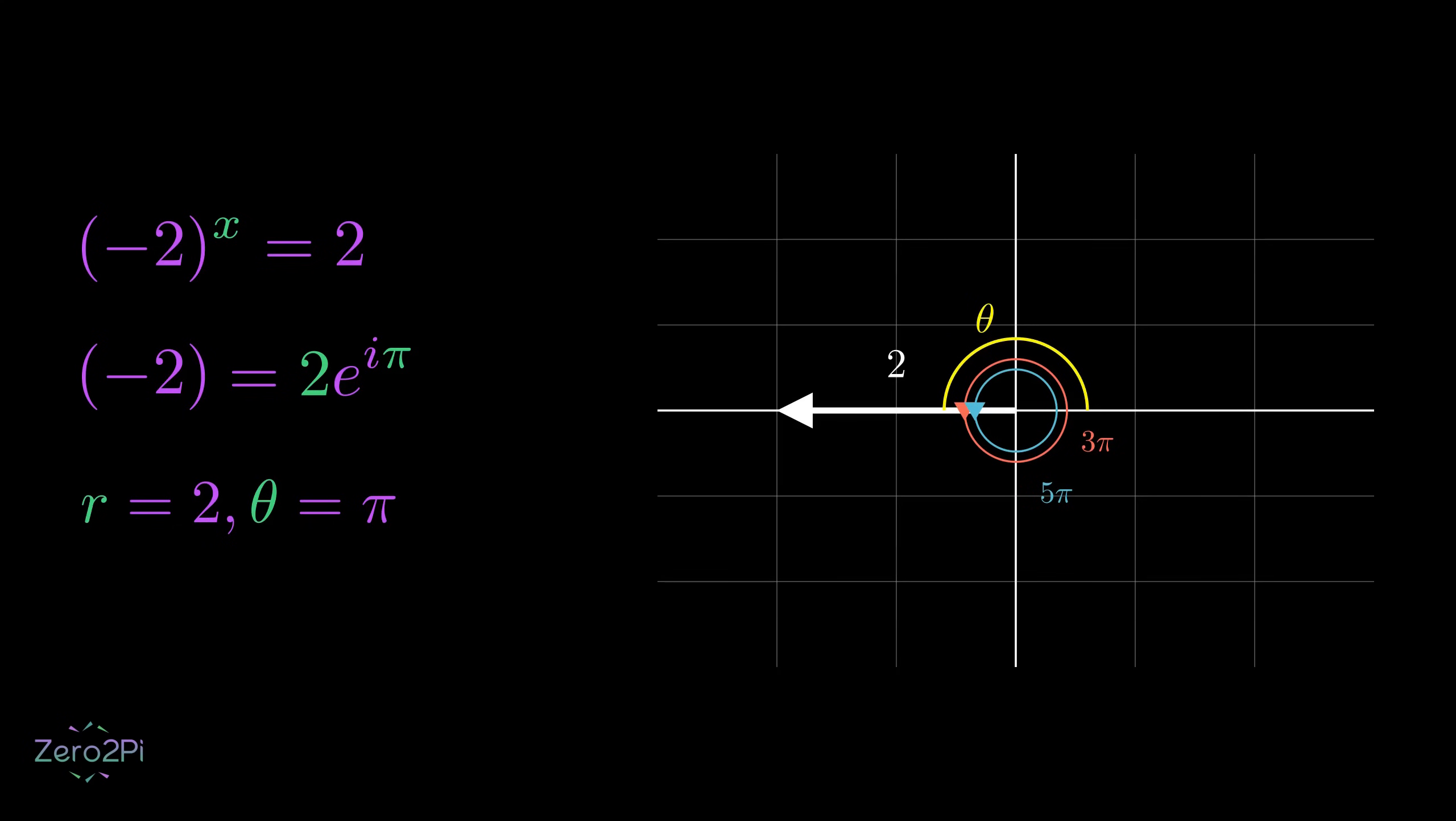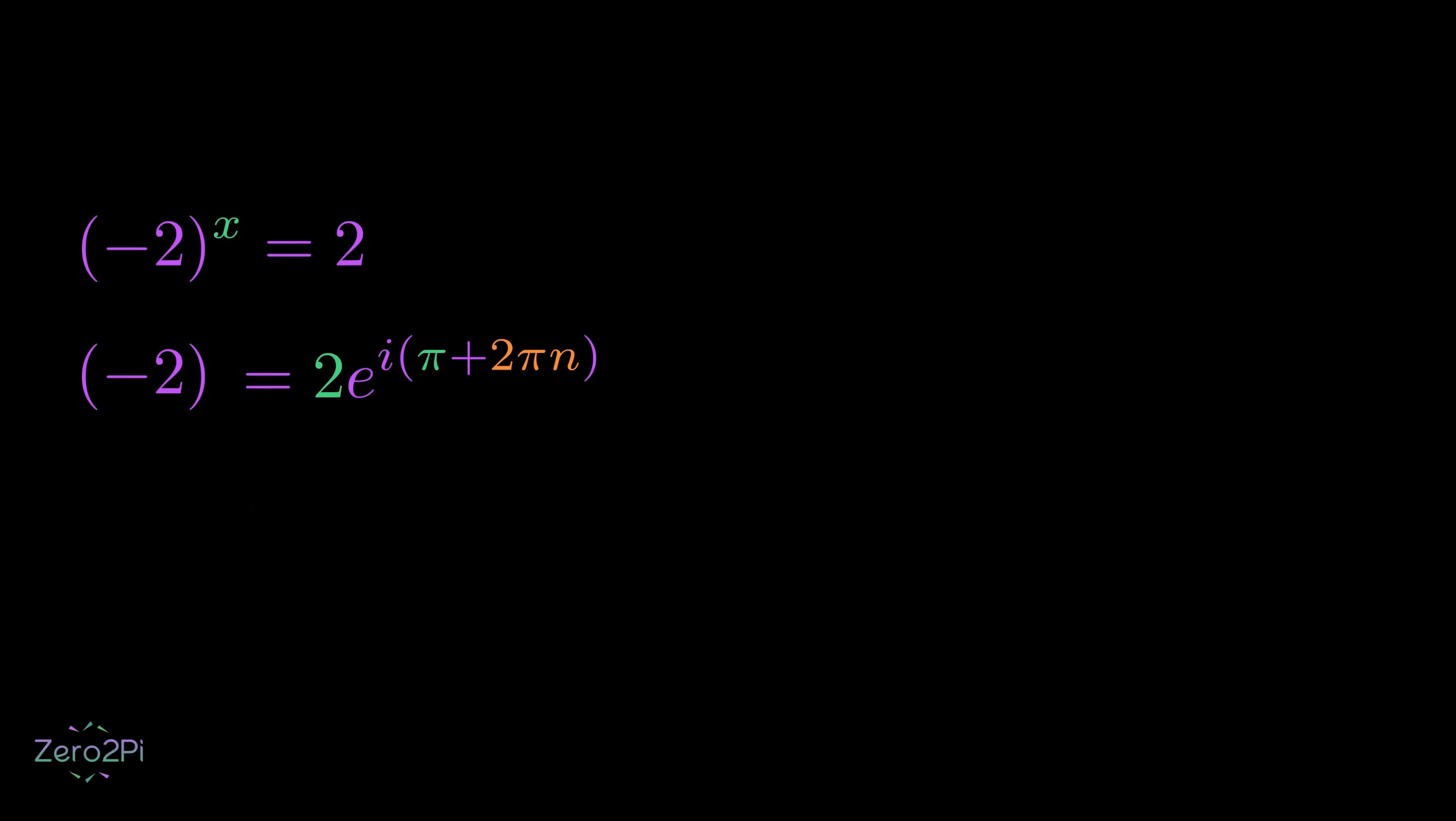In general, we can write negative 2 as 2 times e to the i times (pi plus 2 pi n), where n is any integer. This gives us all the equivalent representations of the same complex number. So we'll move forward to the solution while keeping this in mind.